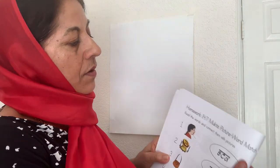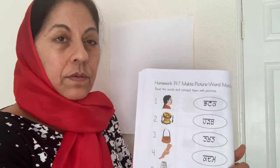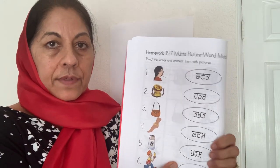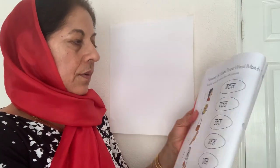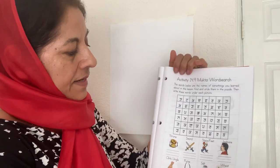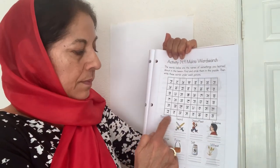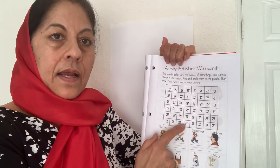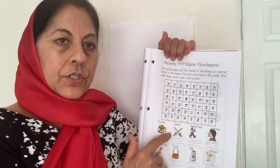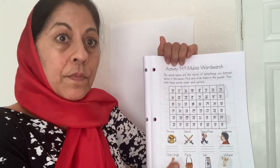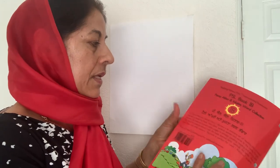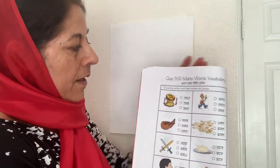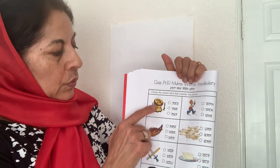Another homework assignment: match the picture with the words. Make sure you learn these picture names and can read these words, then connect them with the pictures. Here is a fun activity — the same words you have learned. First write them in Punjabi, then find those words in the word search. I have done the word search and found all the words — can you find different words in there? That will be an activity you do for homework.